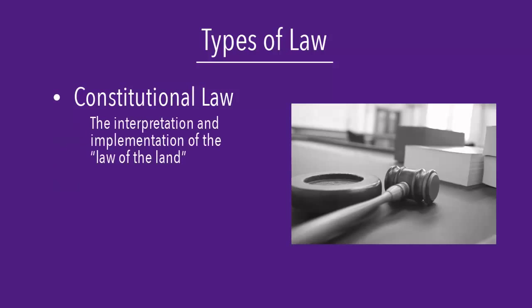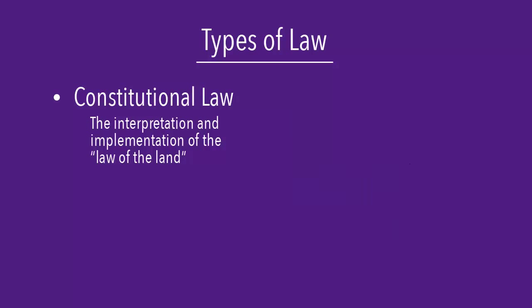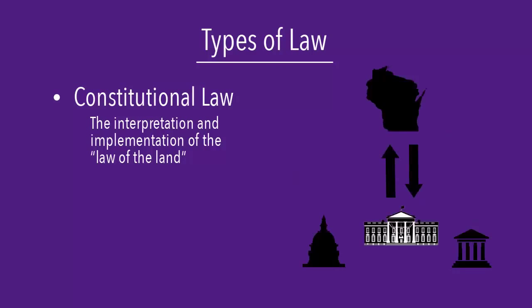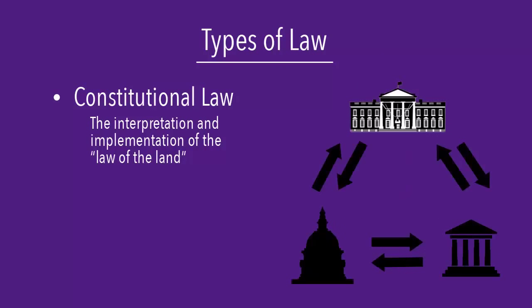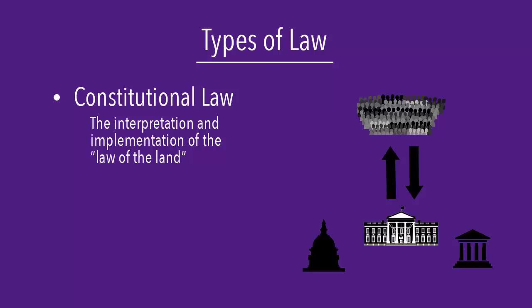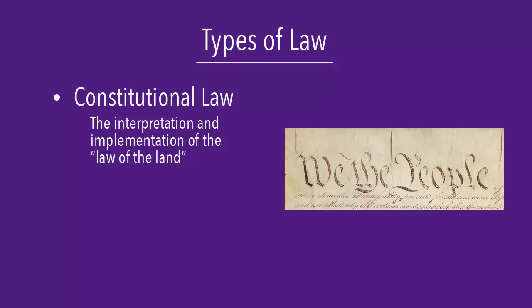Constitutional law deals with the interpretation and implementation of the so-called law of the land. This type of law deals with the relationships among individual states, the states and the federal government, the three branches of government, and individuals and the government. The publication associated with this type of law is the Constitution. You can find the text of the U.S. Constitution and of individual states' constitutions online.